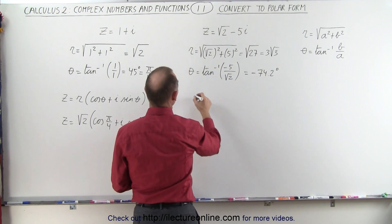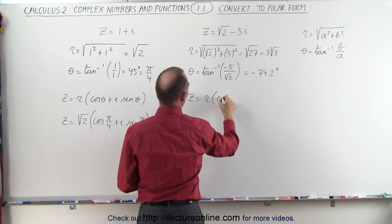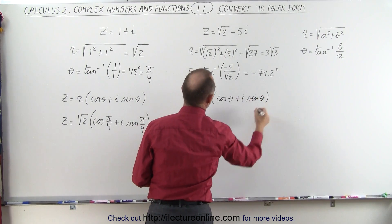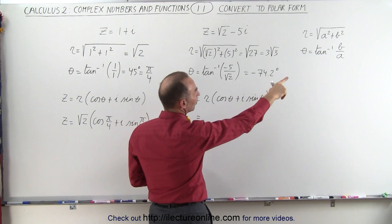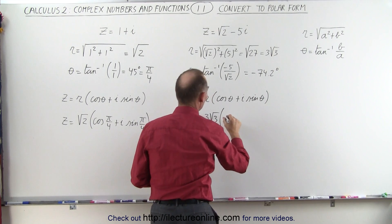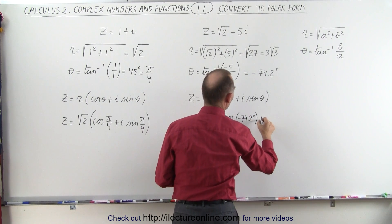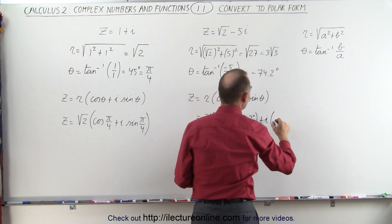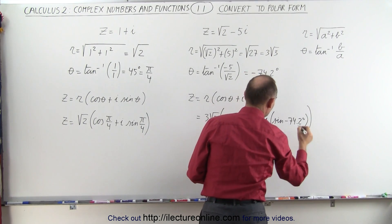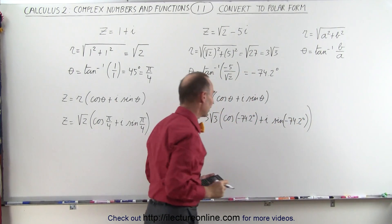So z can be written using the general format r times the cosine of theta plus i times the sine of theta. This gives us 3 times the square root of 3, times the cosine of negative 74.2 degrees, plus i times the sine of negative 74.2 degrees. We want to put parentheses around the angle.